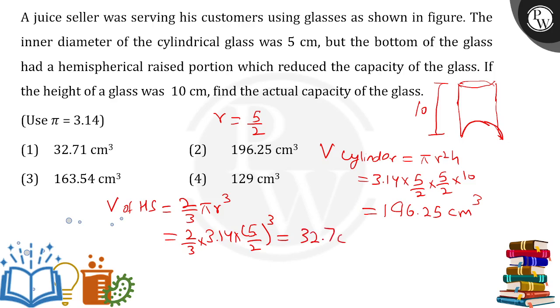Since now the capacity, this is what they are talking about, the capacity will be the volume of the cylinder minus the volume of the hemisphere. For this we have the values: 196.25 minus 32.7. This subtraction will give you the answer as 163.55 cm³, our final answer which matches option number three.